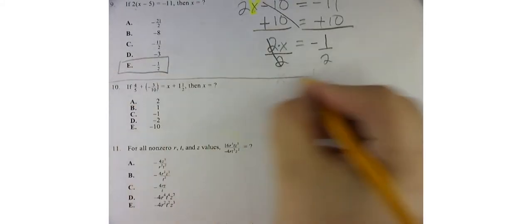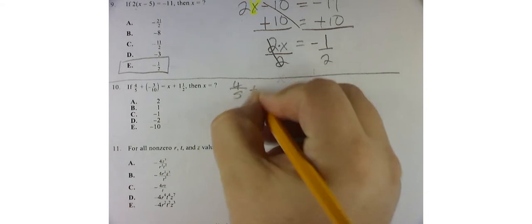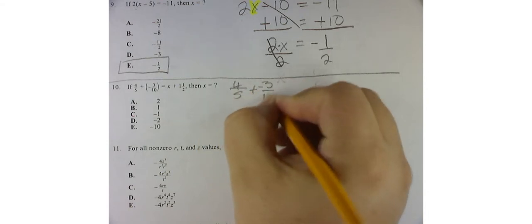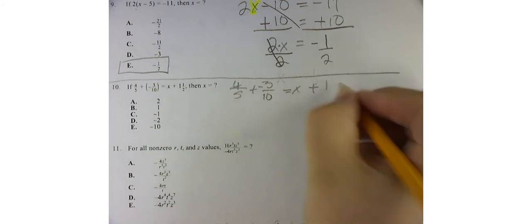Problem number 10. I've got 4 over 5 plus negative 3 over 10 is equal to x plus 1 and 1 half.